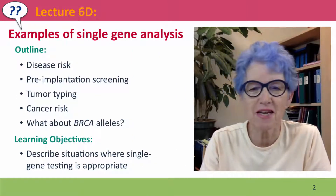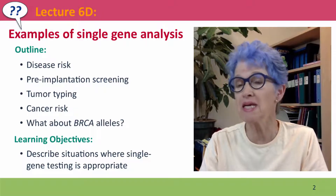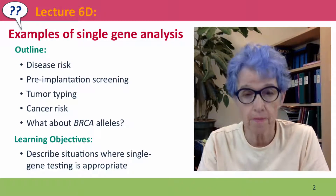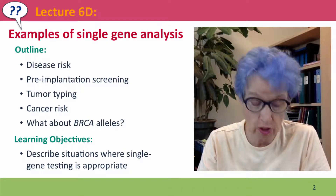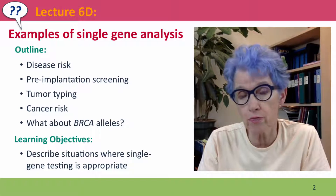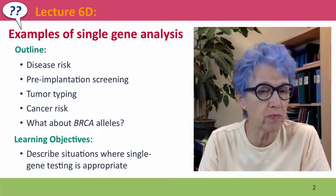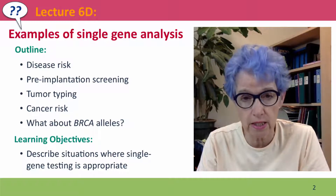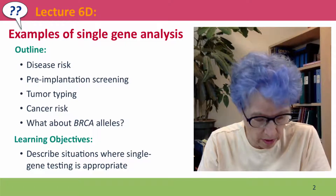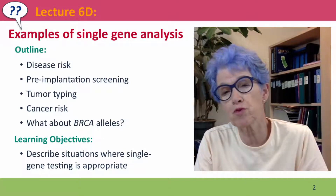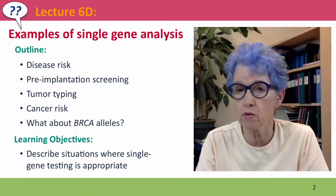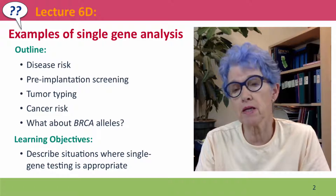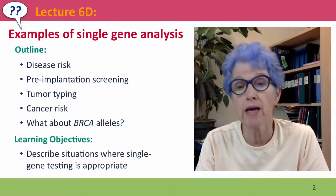Hi, everyone. Welcome back to Eastwell Genetics. This is Lecture 6D, where we're going to talk about examples of analysis of single genes and small groups of genes as part of personal genomics. We'll talk about alleles associated with disease risks, a new technique called pre-implantation screening, using typing for tumor prognosis, and the cancer-causing alleles of the BRCA1 and BRCA2 genes.